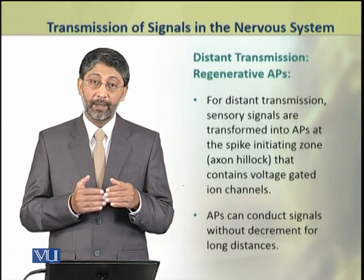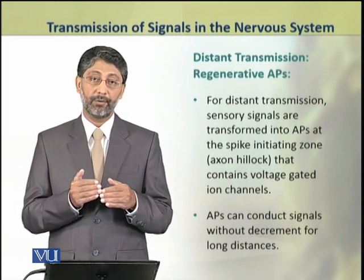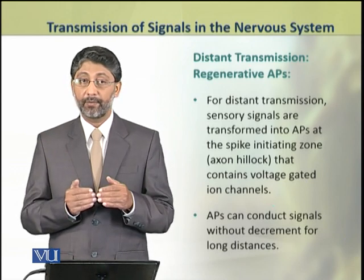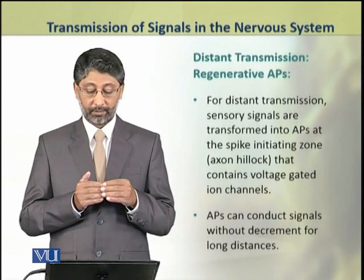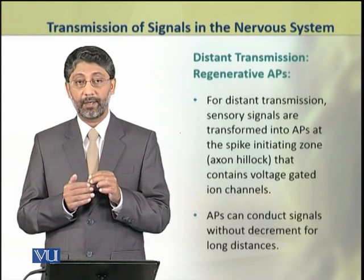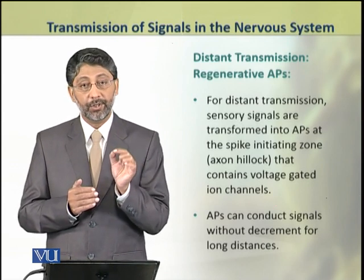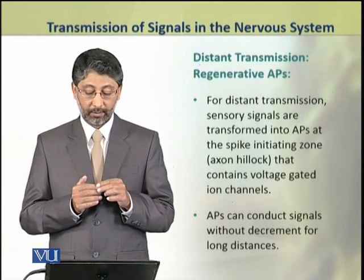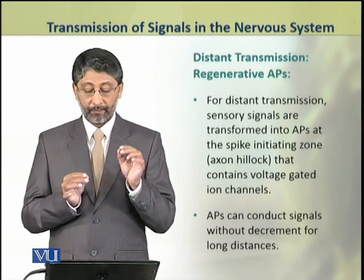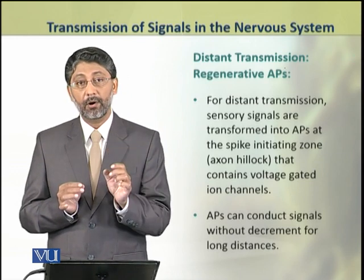For distant transmission, regenerative action potentials are produced at the spike-initiating zone, that is the axon hillock. The axon hillock contains voltage-gated ion channels, which is why action potentials can be initiated here. These action potentials can conduct signals without decrement for long distances.